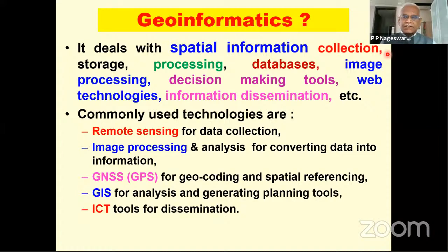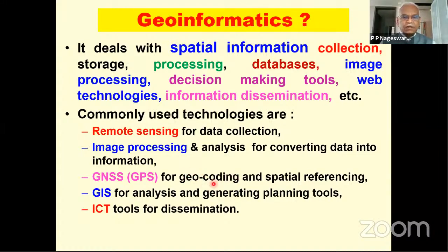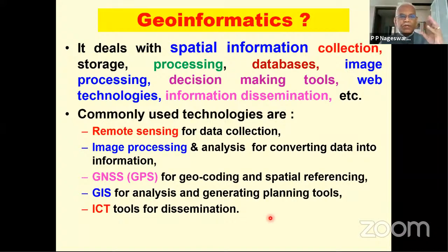The commonly used technologies in geoinformatics are: remote sensing for data collection; image processing and analysis for converting raw data into valuable information; the Global Navigational Satellite Systems — commonly called GPS — for geocoding and spatial referencing, providing location information; Geographical Information Systems, GIS, for analysis and generating planning tools and spatial data analytics; and information communication technologies for information dissemination. These are the supporting technologies which are important components of geoinformatics.